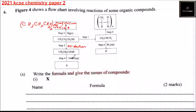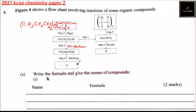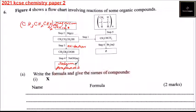In Step 4, when you add sodium hydroxide, that is what we call a neutralization process, and there we get sodium propanoate.